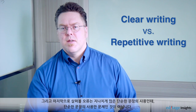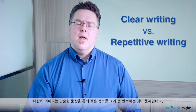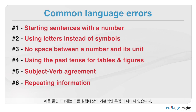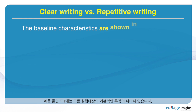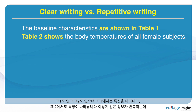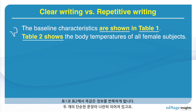The final mistake is having too many simple sentences — specifically, having repeated information back to back in simple sentences. For example: the baseline characteristics are shown in table one. Table two shows the body temperature of all female subjects. We have table one, table two, characteristics are shown, table two shows — all of this information is repeated in two back-to-back simple sentences.